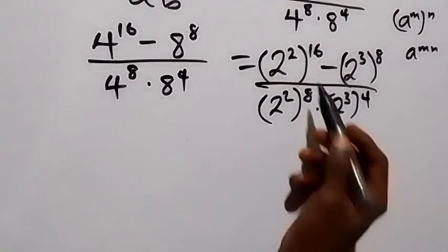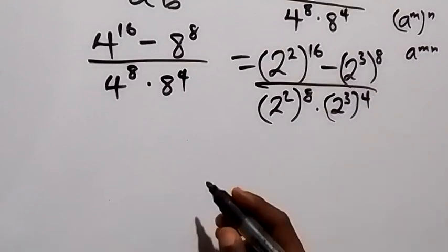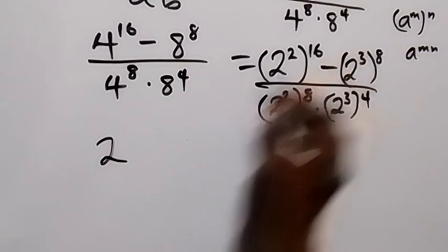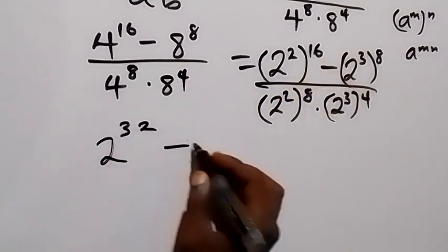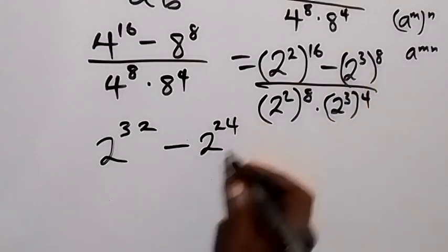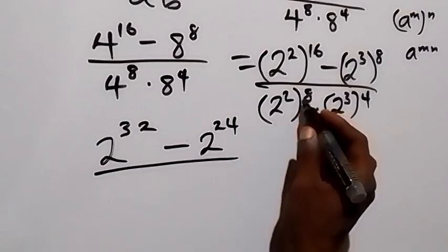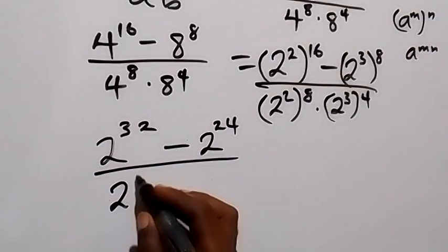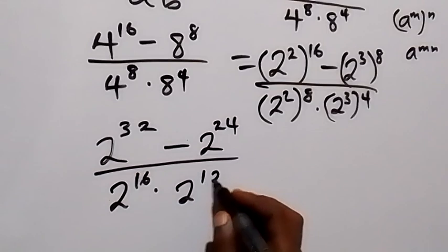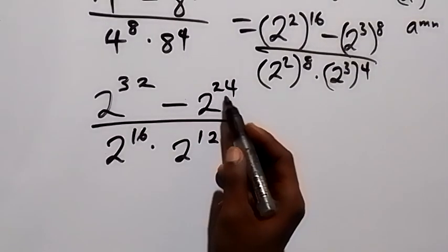In the next step we multiply by this power from the law of indices, and this becomes 2 raised to power 2 times 16, that's 32, then minus 2 raised to power 3 times 8, that's 24, then divided by 2 raised to power 2 times 8, that's 2 raised to power 16, then 3 times 4, that's 2 raised to power 12.